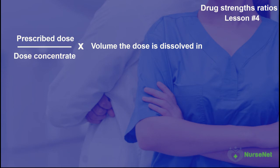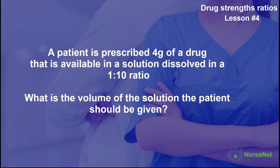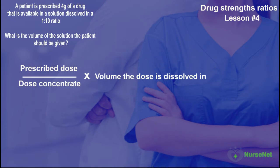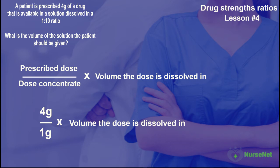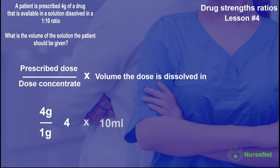Let's do an example. A patient is prescribed 4 grams of a drug that is available in a solution dissolved in a 1 to 10 ratio. What is the volume of the solution the patient should be given? We replace the stock dose part of our formula with dose concentrate, which in this instance is the 1 gram in our 1 to 10 ratio. Therefore, prescribed dose of 4 grams divided by dose concentrate of 1 gram, multiplied by the volume of 10 milliliters: 4 divided by 1 equals 4, multiplied by 10 milliliters equals 40 milliliters. Our answer is 40 milliliters of solution.